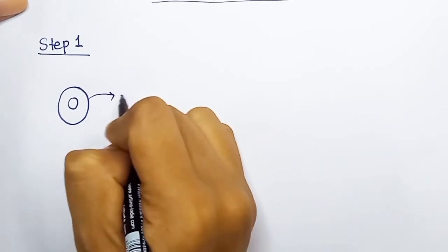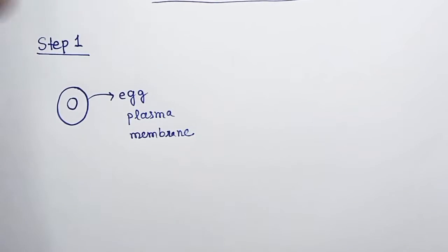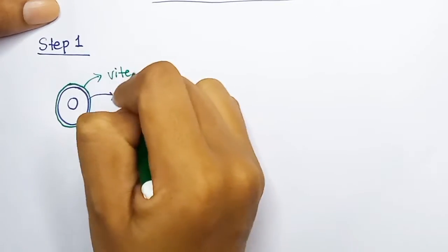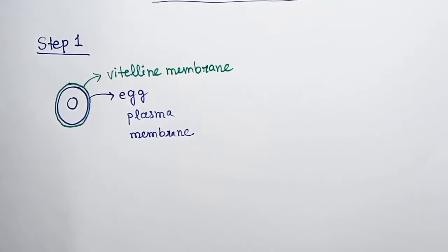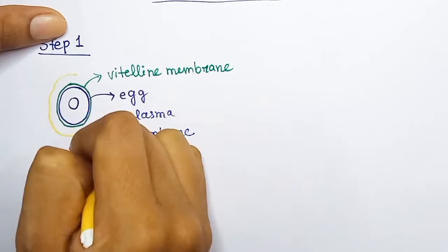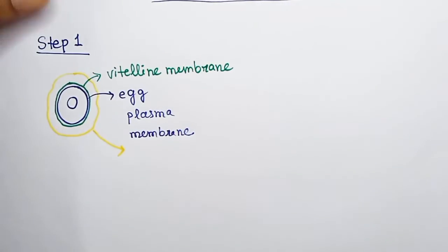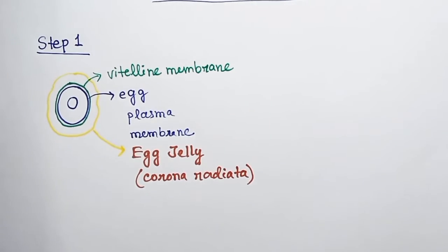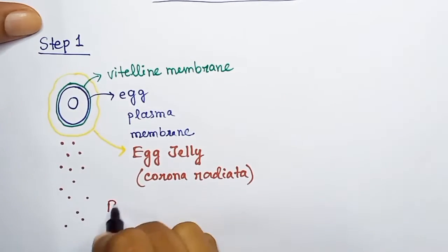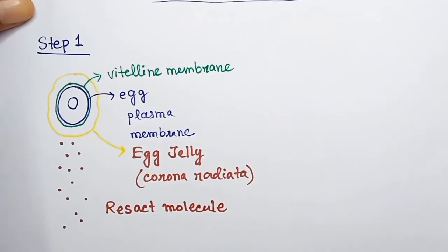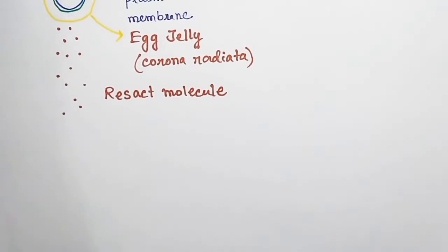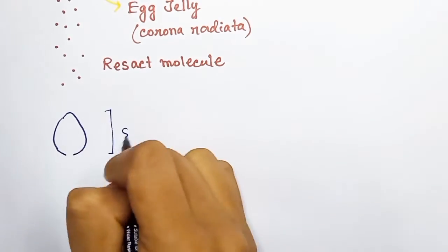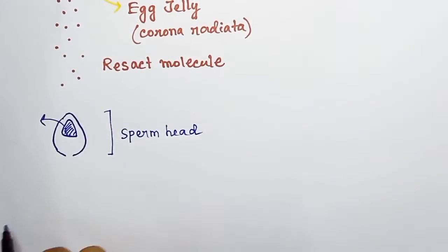In the first step of external fertilization, this is the egg that has been released from the body. The egg, which is a cell, has an egg membrane which is covered by another membrane called the vitelline membrane. And outside the vitelline membrane, there is egg jelly, which is also called corona radiata. This layer, the egg jelly, releases a molecule known as resact molecule, which will attract the sperms towards the egg.